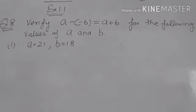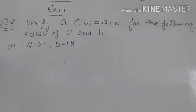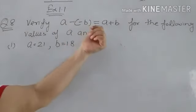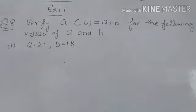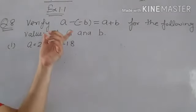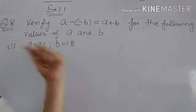Hello students, it is question number 8 of your exercise 1.1, maths class 7th. In this question we have to verify the statement: a minus minus b equals a plus b. The verification of a statement means when we put values of variables in the statement, the LHS should be equal to RHS.